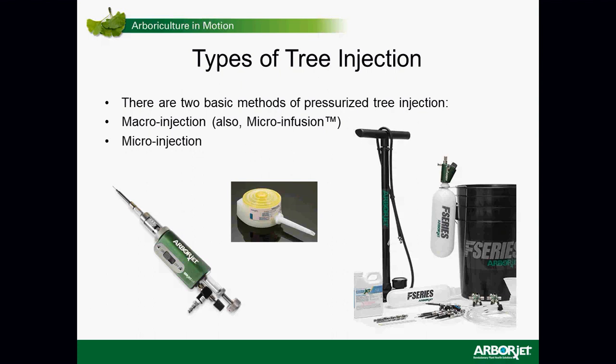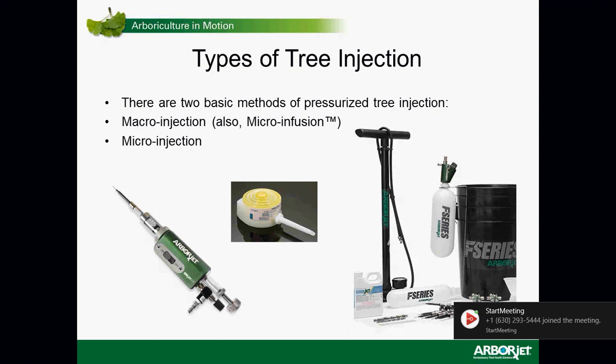There are two basic methods of pressurized tree injection. One is called macroinjection — our term is microinfusion, which we've trademarked. The second is microinjection. Some of the microinjection devices include the Mojo cap, or our QuickJet and QuickJet Air.